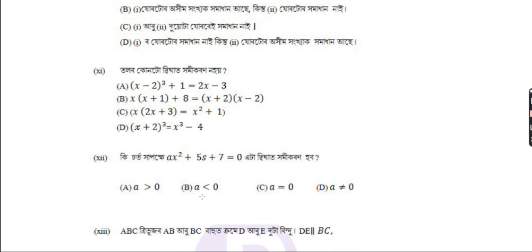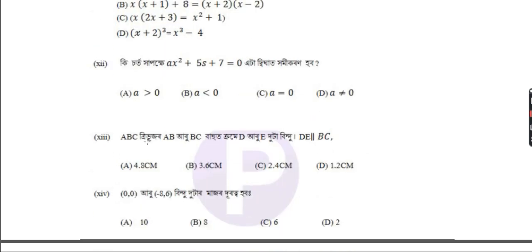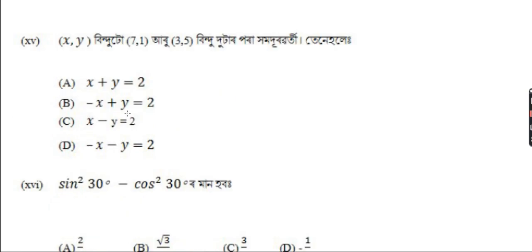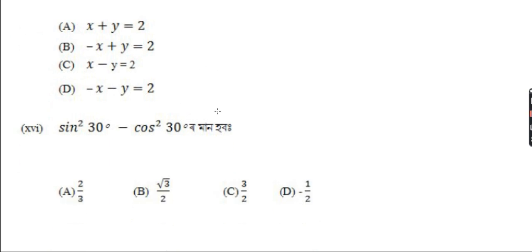He sort of shape: k x squared plus 5x plus 7 is equal to 0. A, B, C tribu jor A, B, R, U, B, C bahuat kome D, R, U, E dhuta bindu. Tente D, E homadral B, C. Ito kundu habo: 0, 0, R, U, minus H, 6 bindu dhuta majo dhuta habo. X, Y bindu dhuta 7, 1 and 3, 5 bindu dhuta. Tene hale, options: x plus y is equal 2, minus x plus y is equal 2, x minus y is equal 2, minus y minus y is equal 2.